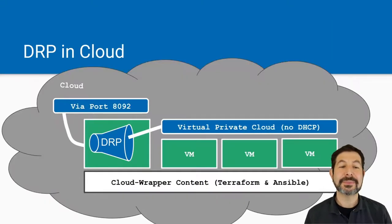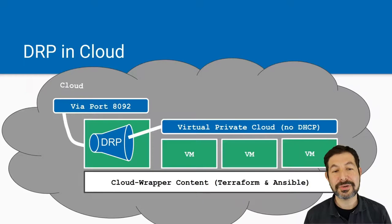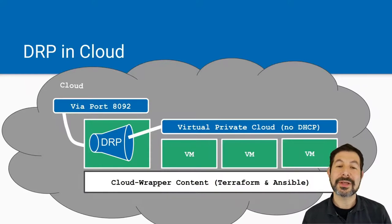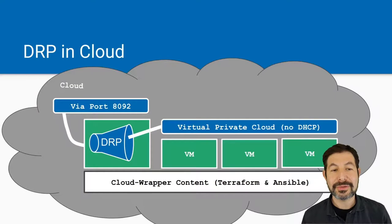For DRP in the cloud, you provision a machine in the cloud using the cloud infrastructure. Make sure you open port 8092 — the Digital Rebar API port — and then you install CloudWrapper. CloudWrapper will automate the process of provisioning and connecting to other virtual machines in the cloud, or other clouds if you want, and connect all those together.